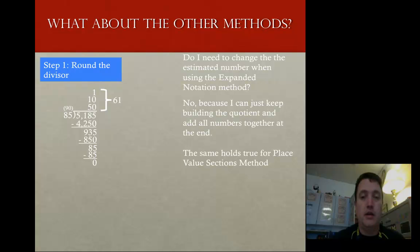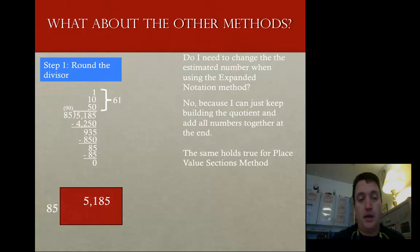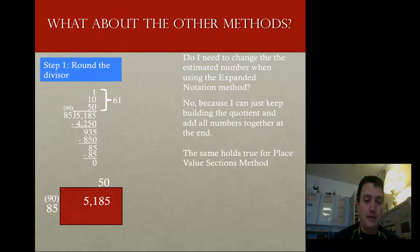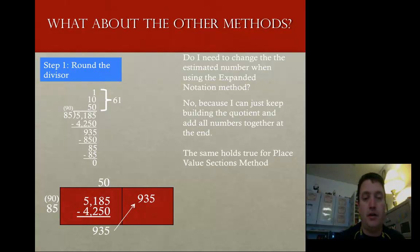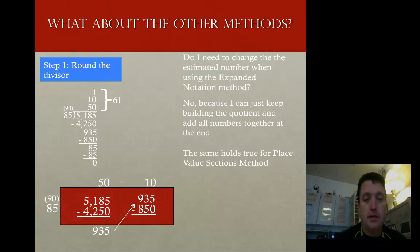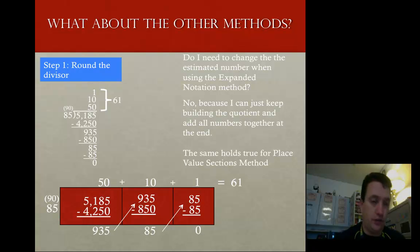What about the place value selections method? Exact same thing. I'm going to start here, take out 90 times 50, then go back and multiply using my original numbers. I get 4,250, then 935. I need to do another box — 10 more gives me 850, and 1 more. I add those together and I get 61.